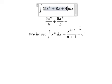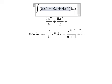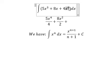For the constant, that is 4x to the power of 0, because 0 plus 1 we have 1. So we just write 4x.